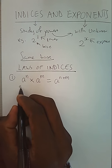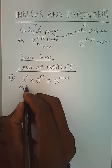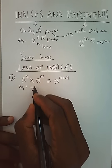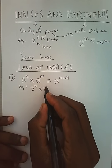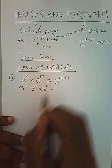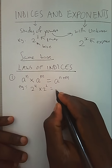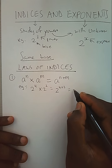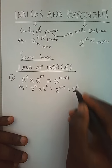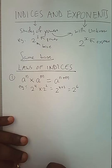For example, 2 power 4 multiplied by 2 power 2 is the same as having 2 power 4 plus 2, giving us 2 power 6.